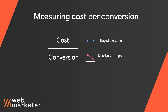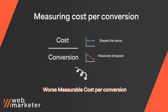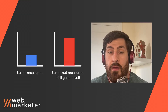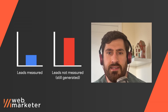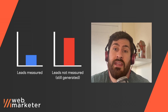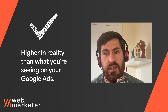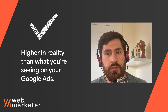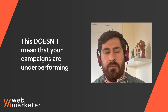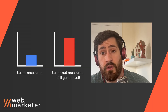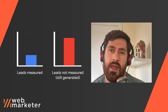Since your cost per conversion is your cost — which stayed the same — divided by the number of conversions, which have now massively dropped, your measurable cost per lead now looks so much worse. Measurable is the key word here, since it's no longer the number of leads you're getting, but the number of leads you're able to measure — which will be higher in reality than what you're seeing on your Google Ads. This doesn't mean that your campaigns are underperforming, just that fewer conversions are being reported than you're actually getting.